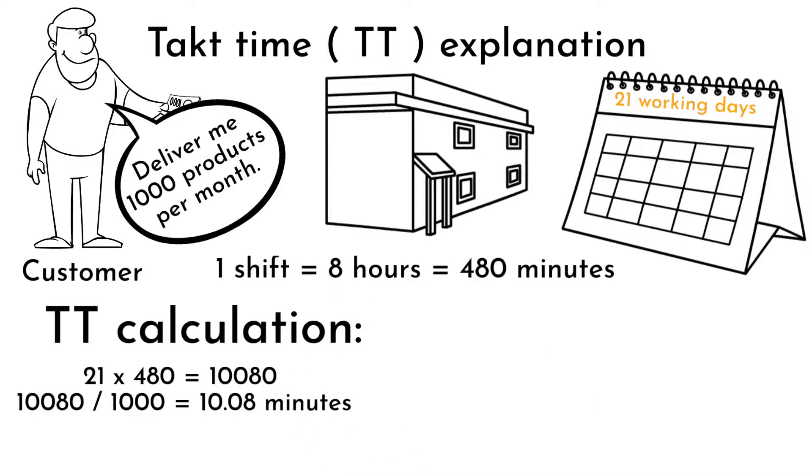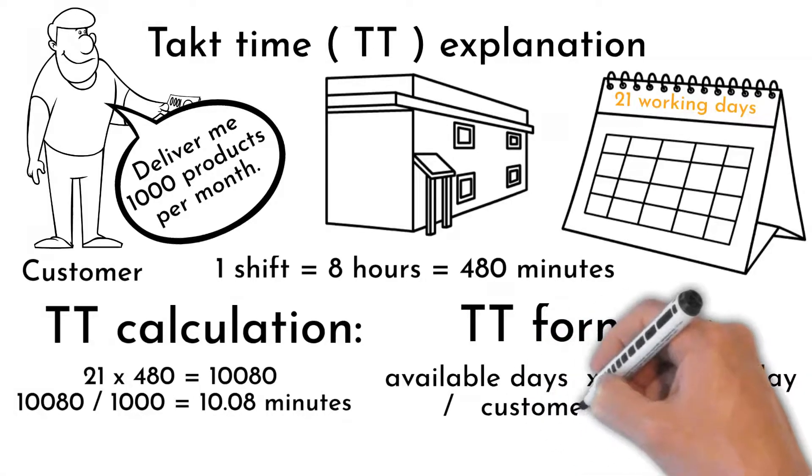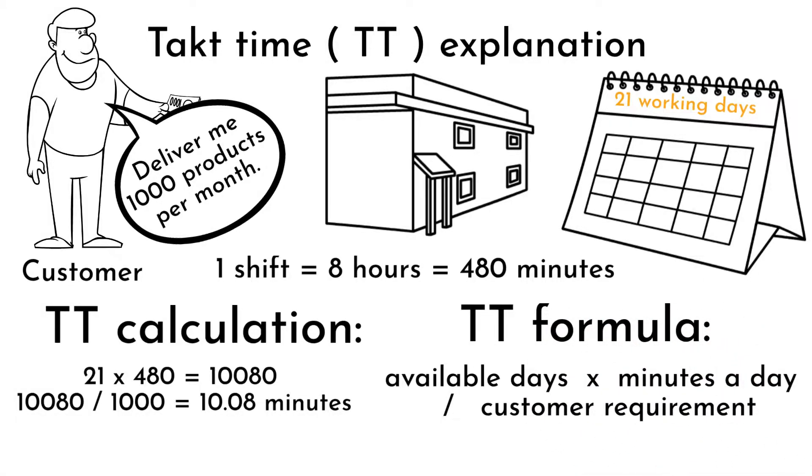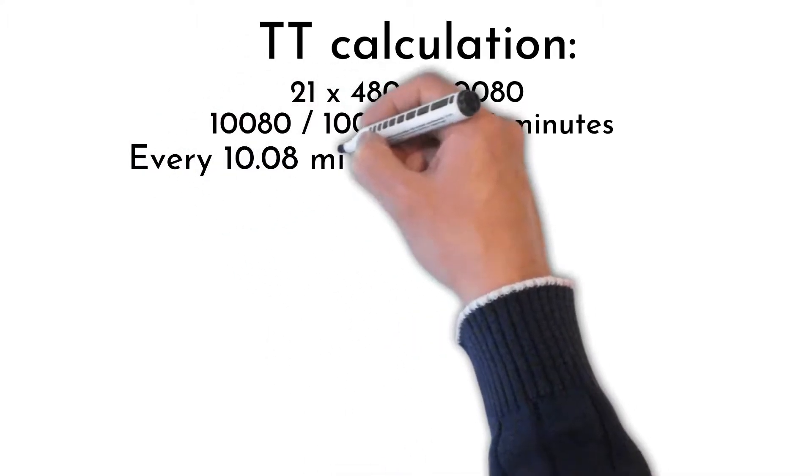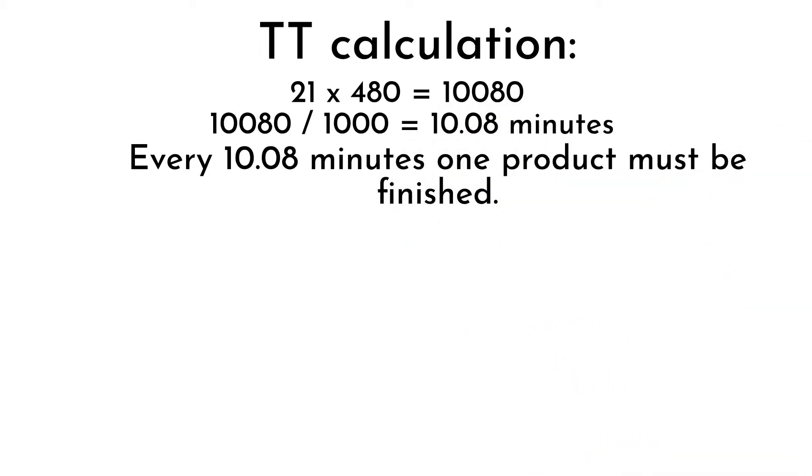Takt time formula is: available days per month times number of working minutes per day, this number divided by customer requirement or targeted production. To fulfill customer requirement our takt time needs to be maximum 10.08 minutes. That means approximately each 10 minutes in average we need to finish one product.